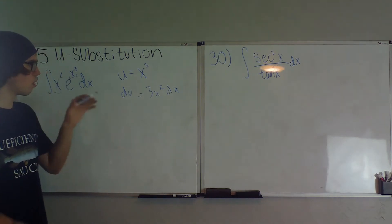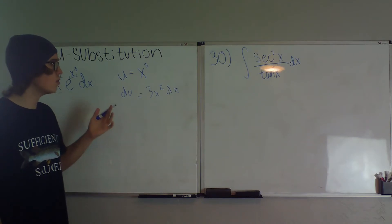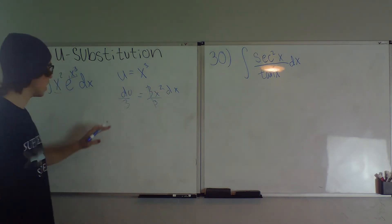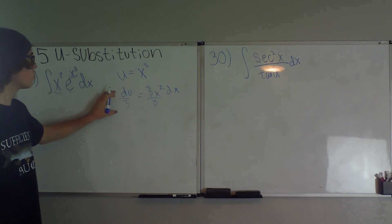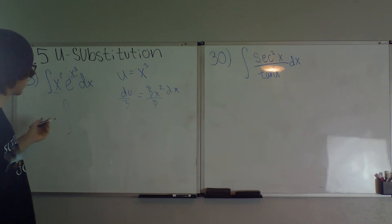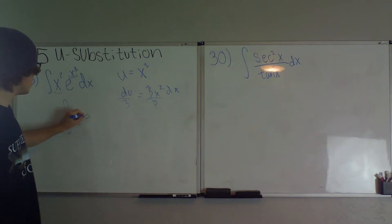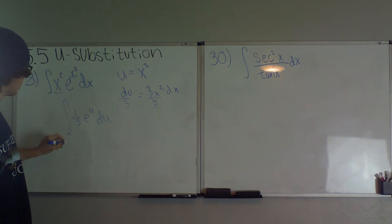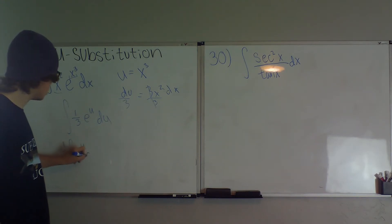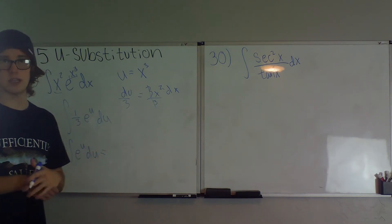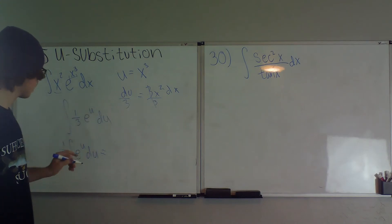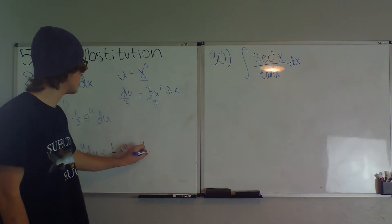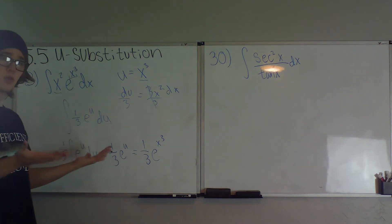We have that extra 3, so we divide both sides by 3, giving us x squared dx equals du/3. Now we can rewrite this integral as the integral of 1/3 · e to the u du. We pull out the 1/3, and the integral of e to the u is just e to the u. So this equals 1/3 · e to the u, and substituting u = x cubed back in, we get 1/3 · e to the x cubed.